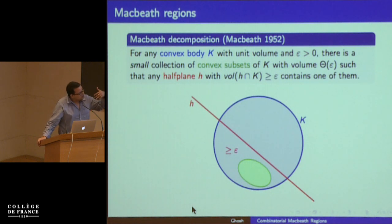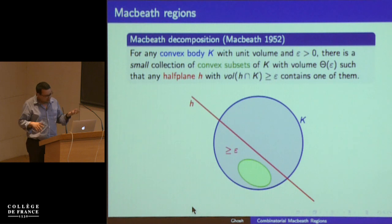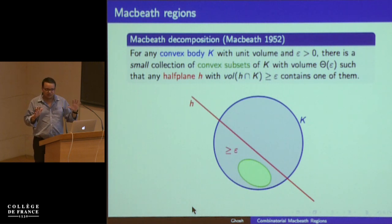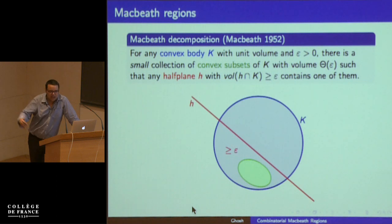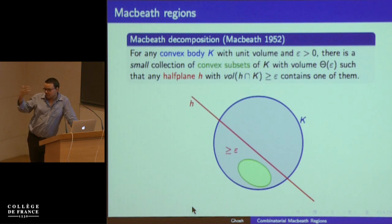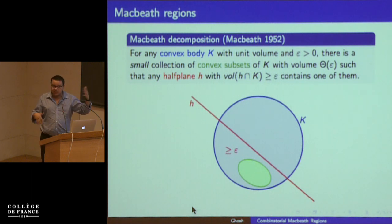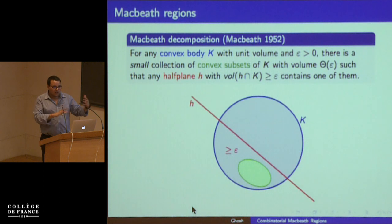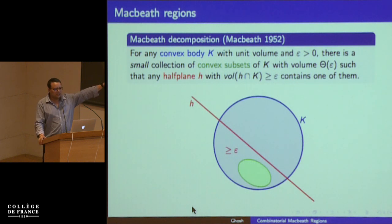It's very natural for people who work in combinatorial geometry to see this as similar to epsilon nets. If you have a set system with bounded VC dimension, we know we can find a small set of points such that any set of size greater than n·epsilon is hit by that point. But Macbeth's result says something more: it's not only hit by one point, but hit by an object which has large volume. The motivation of this problem is: can we have an analogous result in the combinatorial geometry setting for Macbeth regions?